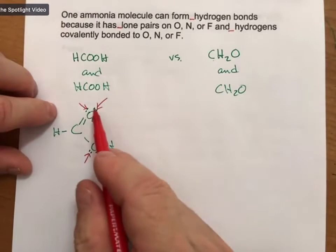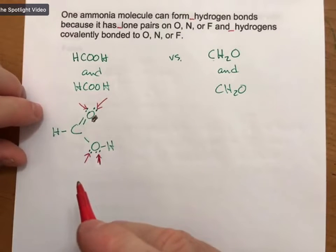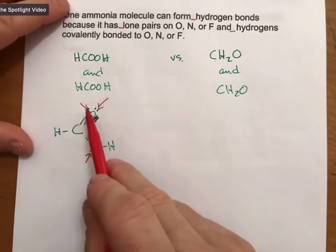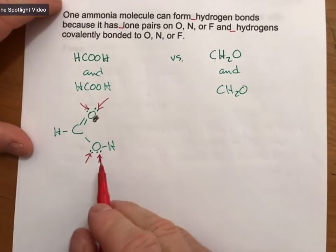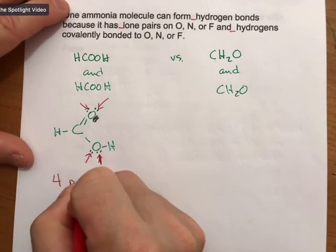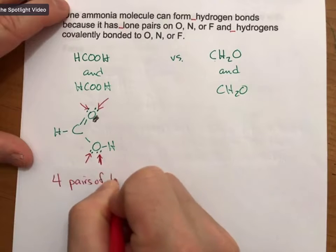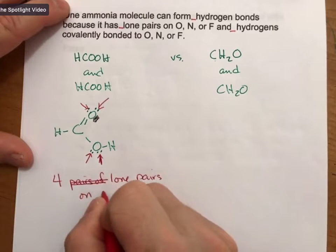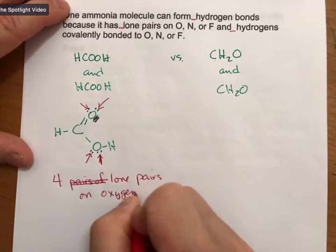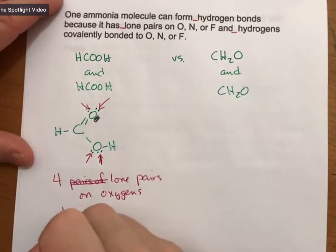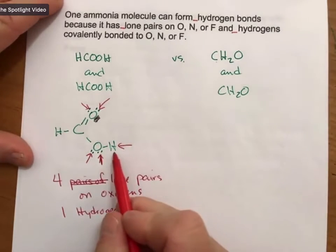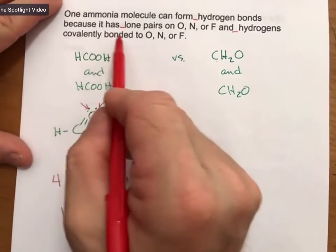One, two, three, four. All right. Yeah, let's go with it. It has four hydrogen bonds that it can form. So four lone pairs on oxygens. And one hydrogen, that's the one right here. One hydrogen covalently bonded to oxygen.